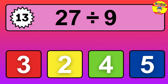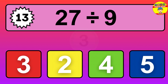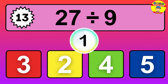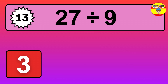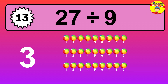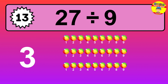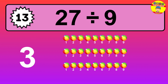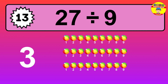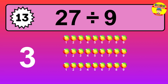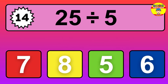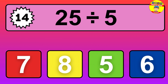27 divided by 9 is... time to think. Let's go to the solution. Divide the number 27 by 9. Each group contains 9 units, so dividing 27 by 9 results in 3 equal groups. Thus, the result is: 27 divided by 9 equals 3. 25 divided by 5 is... time to think.